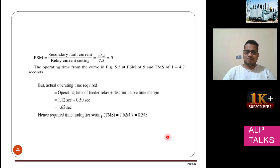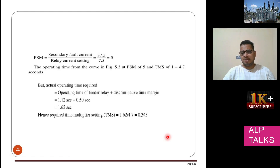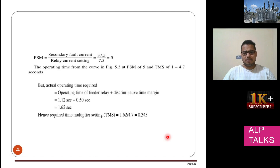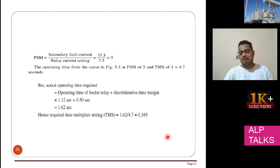The secondary fault current is 7500 / 200 = 37.5 amps. The relay setting at 150% is 7.5 amps, so PSM = 37.5 / 7.5 = 5. For PSM of 5 at TMS = 1, the operating time is 4.7 seconds. The discrimination time is 1.12 + 0.5 = 1.62 seconds. So TMS = 1.62 / 4.7 ≈ 0.34.